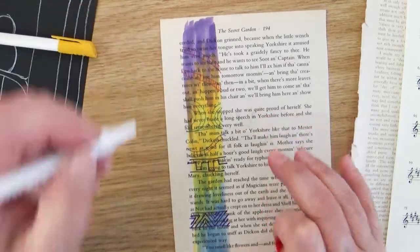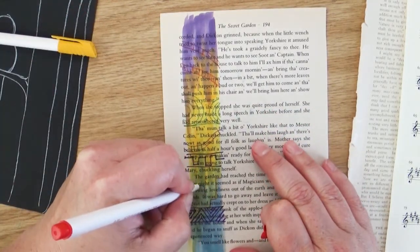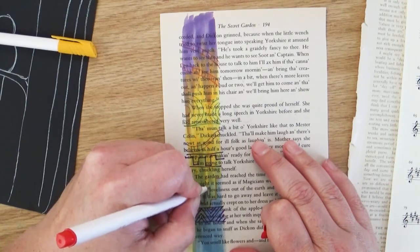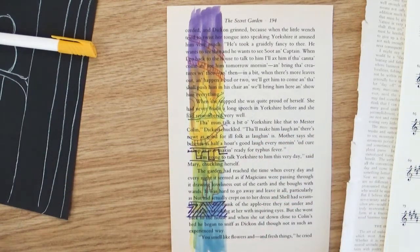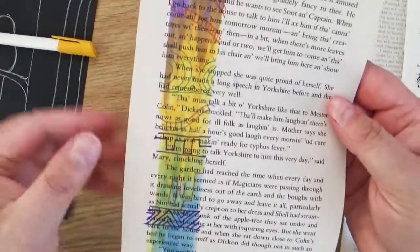The book page that I'm using actually came from a beat-up copy of The Secret Garden, and so that's why I thought it'd be fun to use that page to create kind of a garden scene and I wanted to put the robin in there.